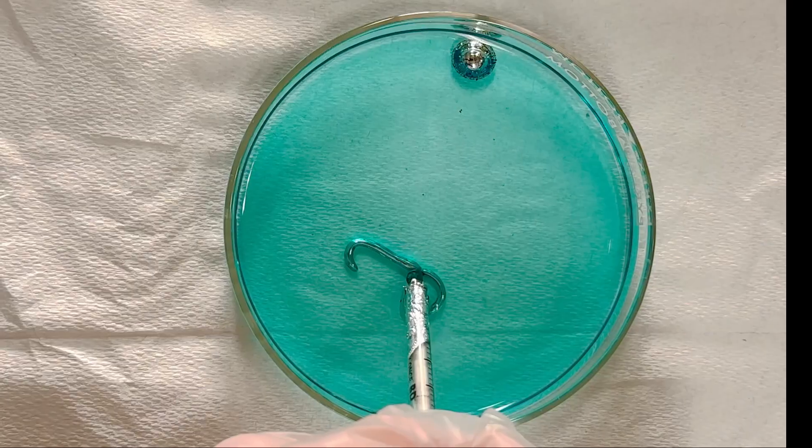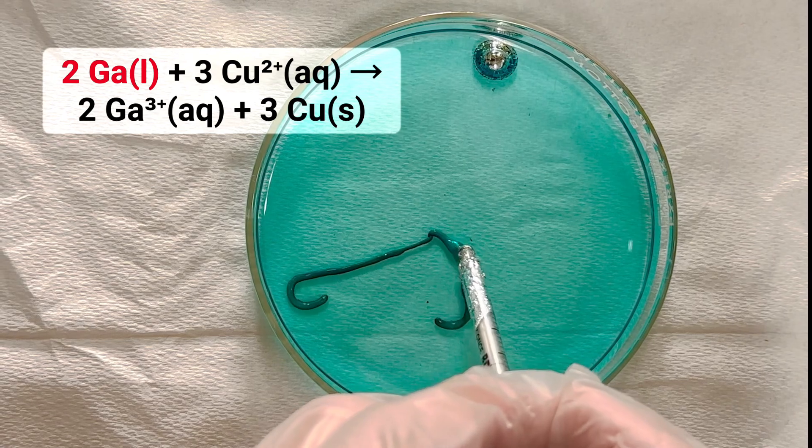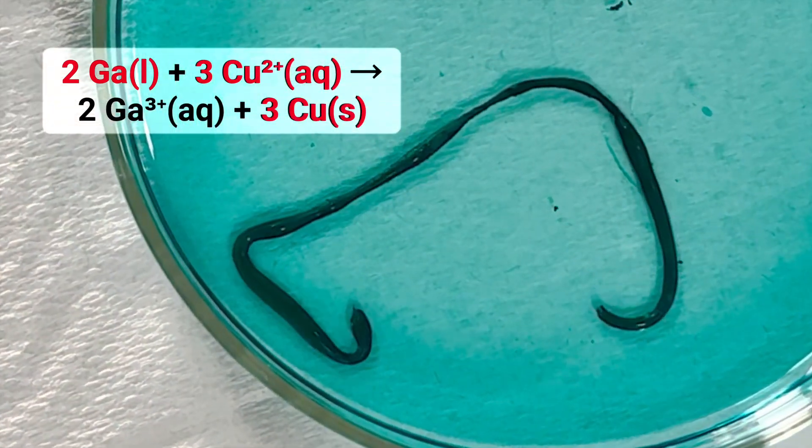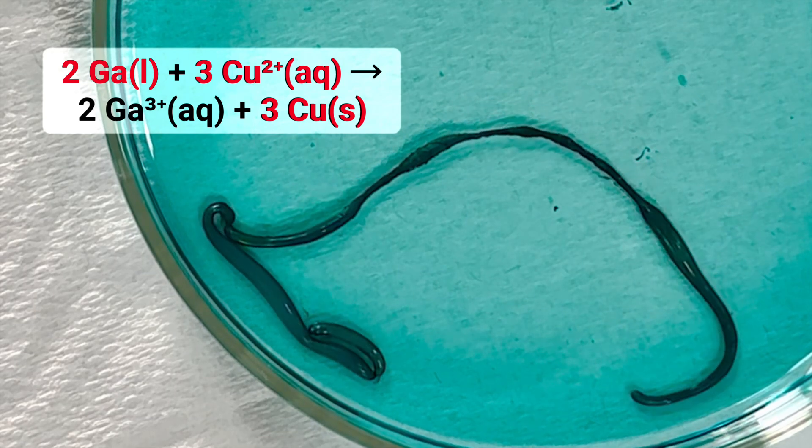When injected into the solution, a chemical reaction occurs between the gallium atoms on the surface of the liquid and the copper ions in the solution. Copper nanoparticles are formed as a result of this reaction, and these nanoparticles adhere to the surface of the liquid blob.